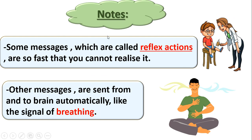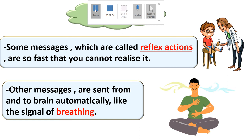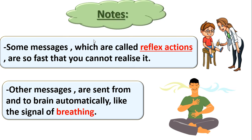There are some messages that are very, very fast and we cannot even realize them. Like when you touch a cactus plant and move your hand away — this is called a reflex action. You make it very, very fast. You make the reflex action in a time called reaction time. So this is called a reflex action, and it happens in a very short time called reaction time.